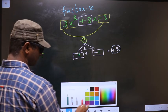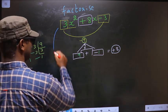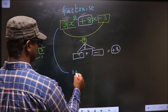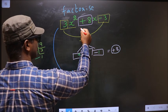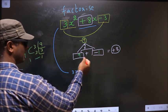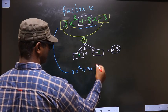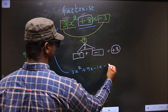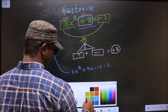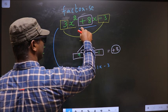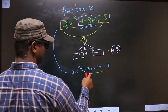Now, you change this. 3x square in place of 8x. Now, you should write this: that is plus 9x minus 1x minus 3. Did you understand? In place of 8x, I have written this.